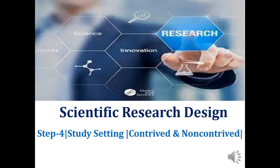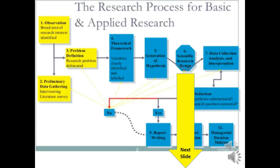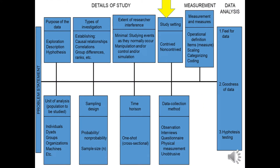Bismillahirrahmanirrahim. Dear students and viewers, today we discuss scientific research design — specifically the step covering study setting: contrived and non-contrived. Scientific research design is step six in the basic research process for both basic and applied research. Before this, we already discussed study elements like purpose of data, types of investigation, and extent of researcher interference. Today we discuss four steps of the scientific research design framework.